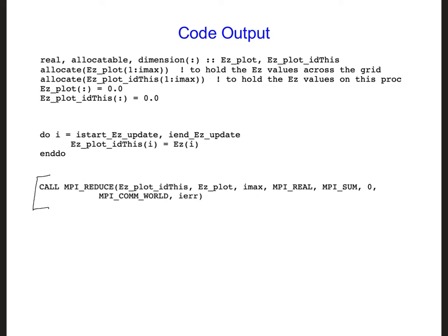Then in the next part, after the time stepping ends, we can use MPI_reduce to combine all the EZ_plot_idthis values into the EZ_plot array. So there's IMAX numbers for EZ_plot. They're all real numbers. We're summing them together and that's why having zeros on the field components that are not updated on that processor equal to 0 is helpful.